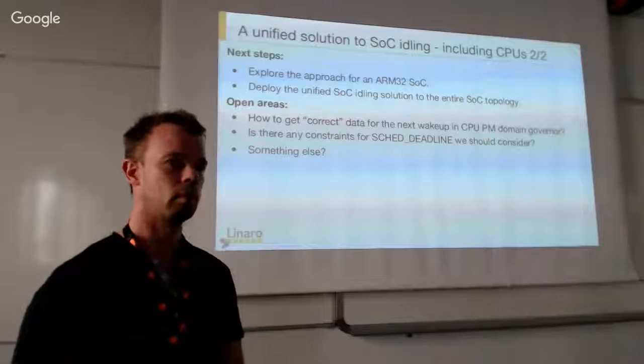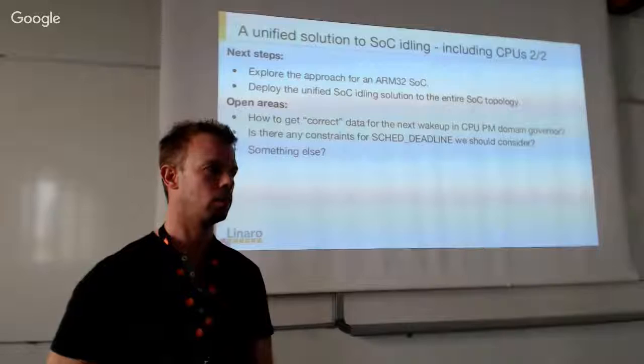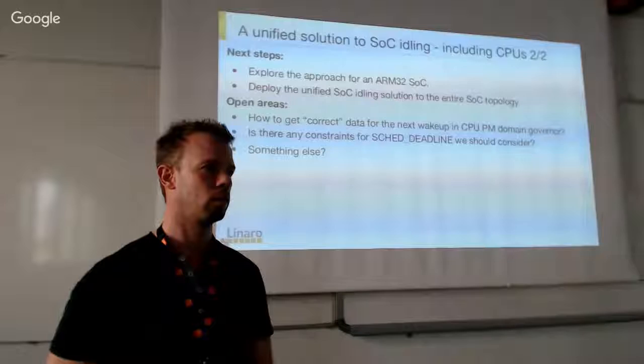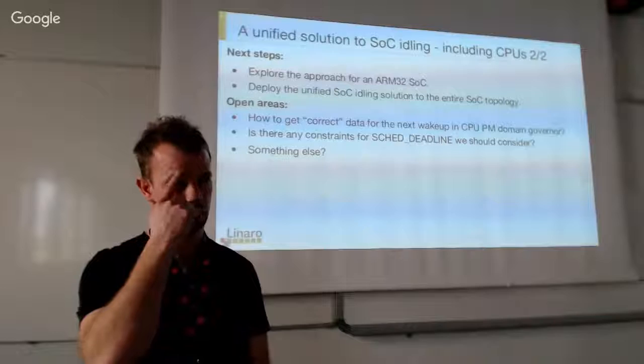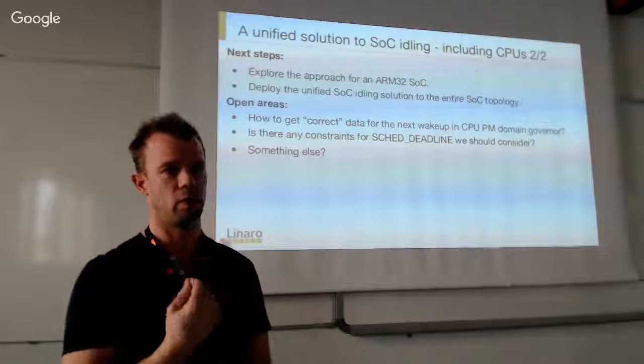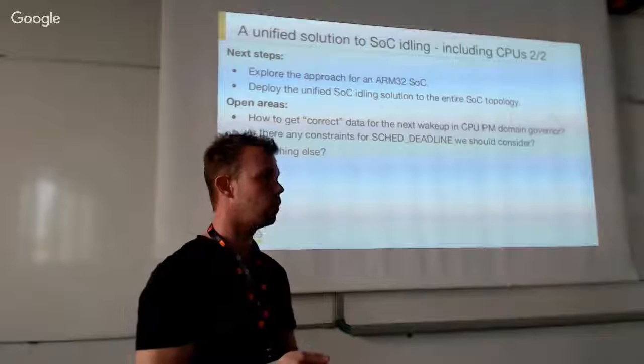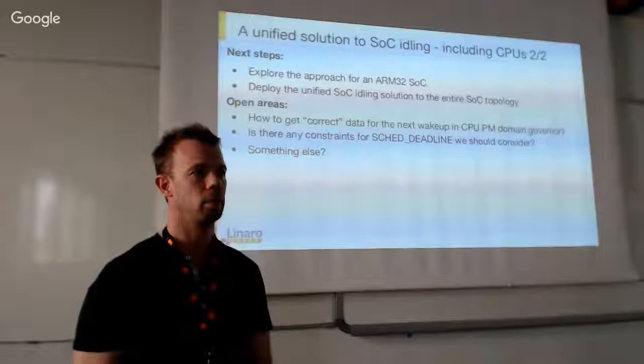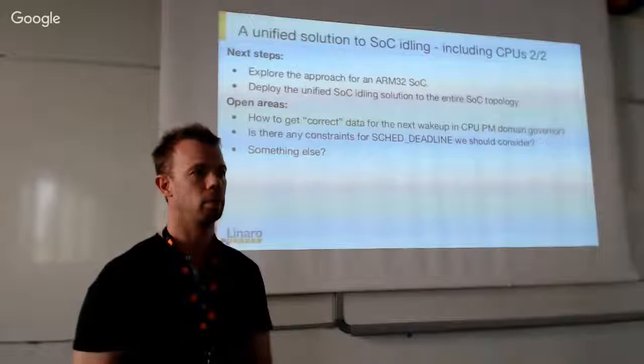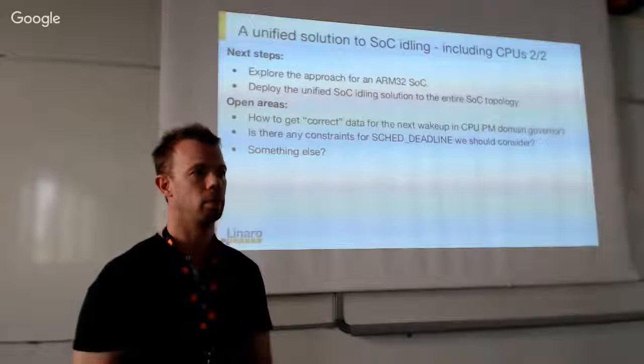We should be able to compute the maximum latency constraint. You can add QoS constraints to CPUs. In this deployment the CPU is just a device, so in principle you should be able to use the PM QoS framework for CPU resume latency constraints - that's actually what we already use for CPU resume latency. As long as we know what values to put in there, it makes sense to use the existing framework.